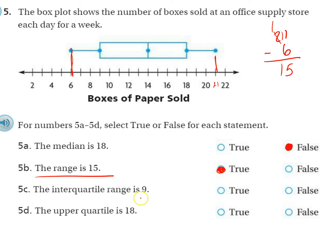The interquartile range is 9. The interquartile range, to get that range, you take the upper quartile, which is here, 18, minus the lower quartile, which is here, looks like that's 9, and we get 9, and that's what they say it is. So yeah, that's true.